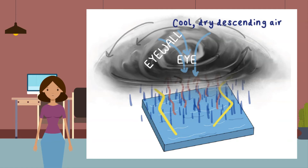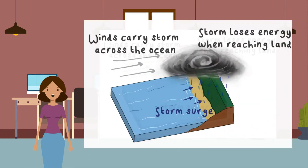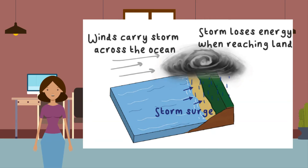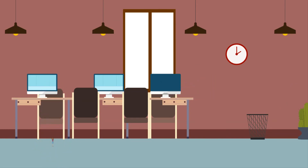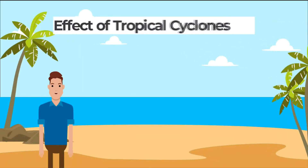Surrounding the eye is the eye wall — the most intense and powerful area of the storm — where warm moist air rapidly rises with extremely high winds and torrential rain. Step six — when the tropical cyclone reaches a coast, the low pressure and high winds push a large amount of seawater onto the coast, called a storm surge. When the storm reaches land it no longer has a supply of energy from the warm moist air at sea; the eye eventually collapses and the storm dissipates, though heavy rain can persist for days.